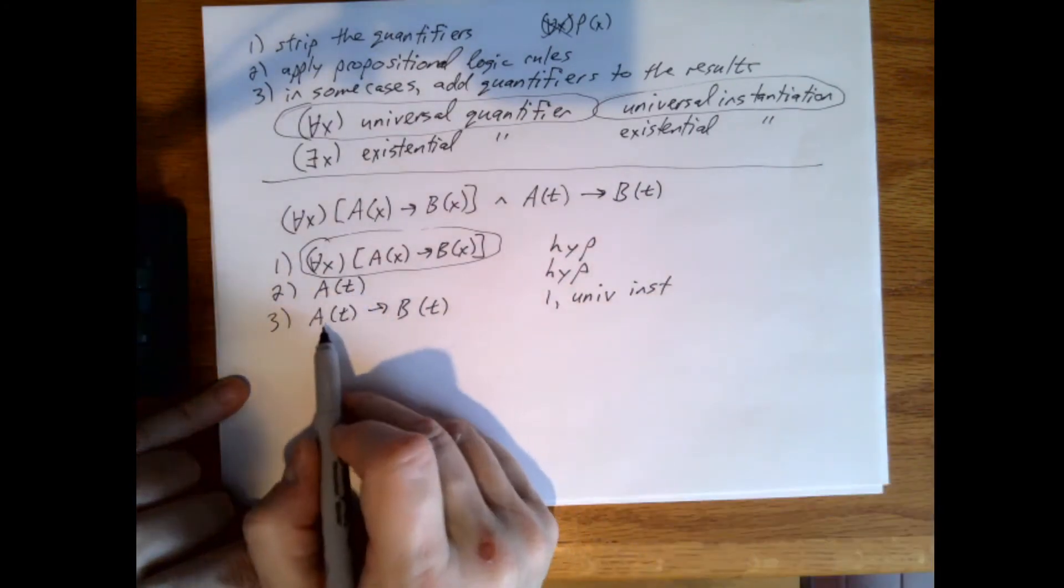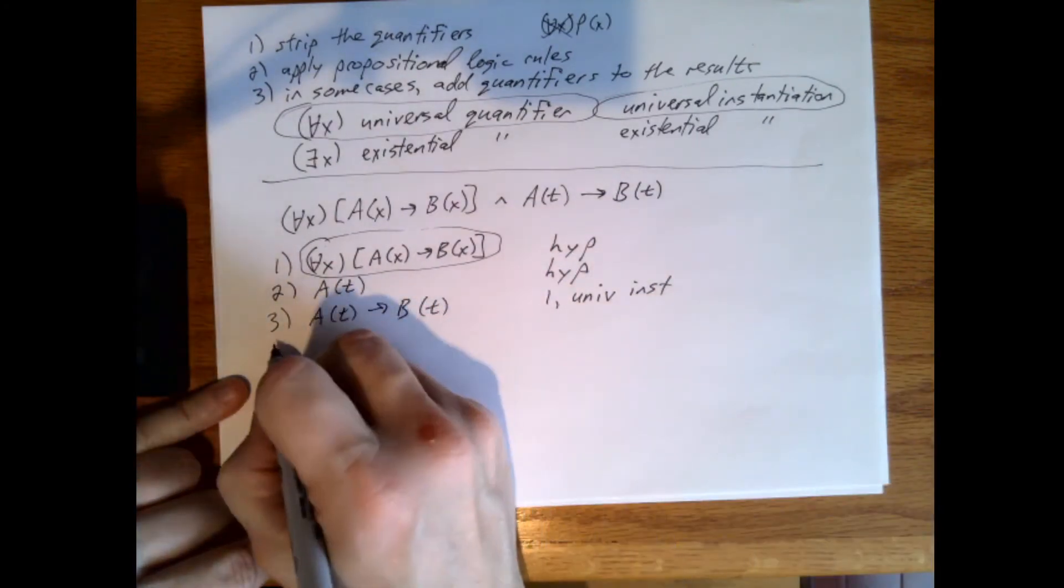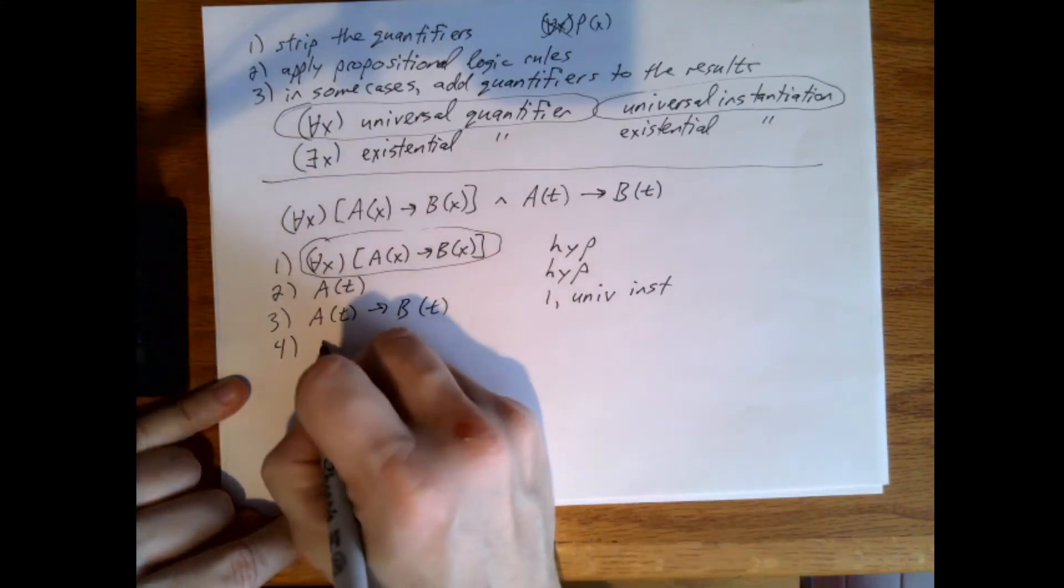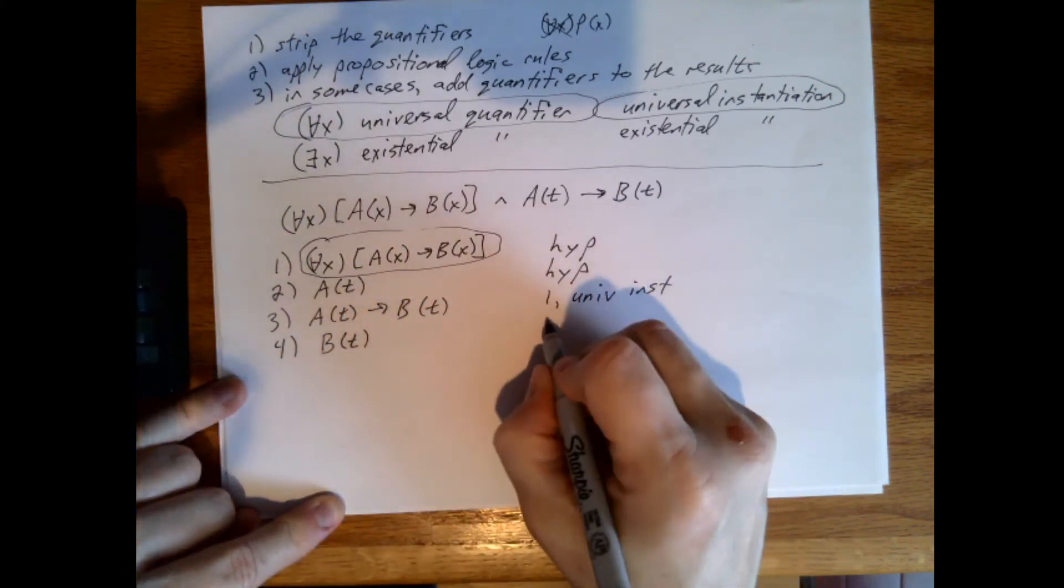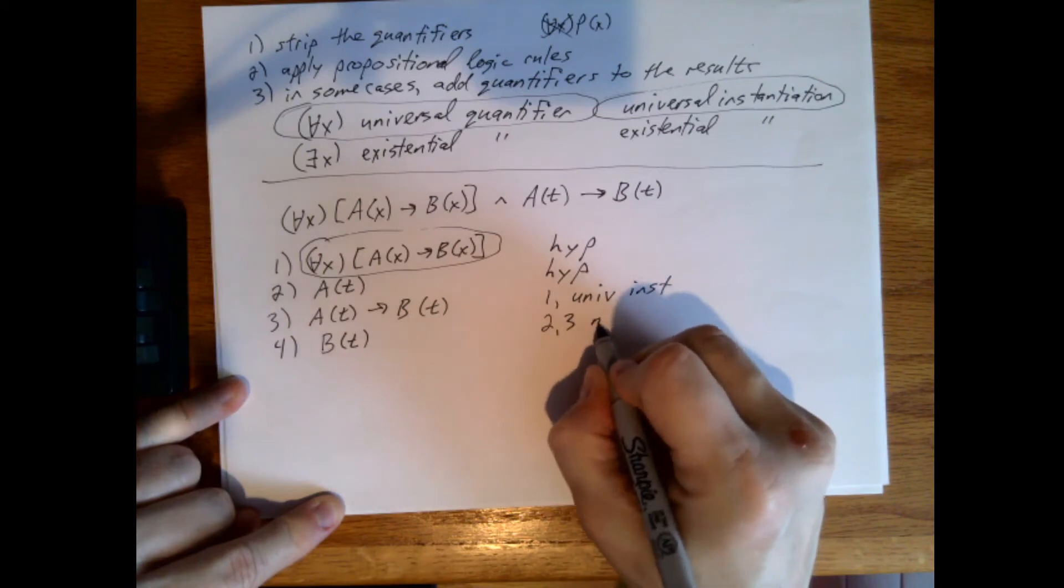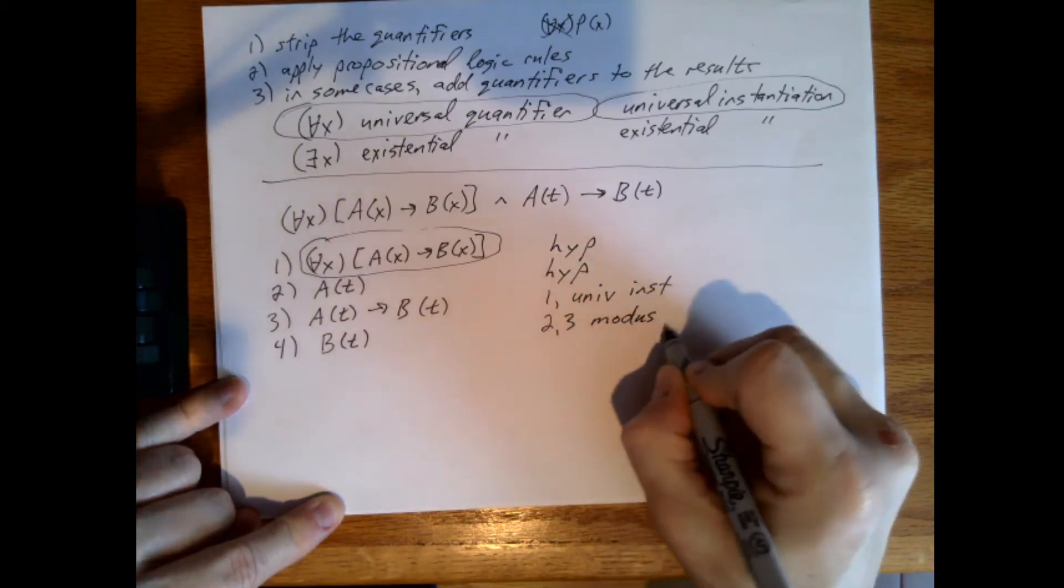And now that I have a of t, and a of t implies b of t, then we can get b of t by saying two, three, and modus ponens, just like before.